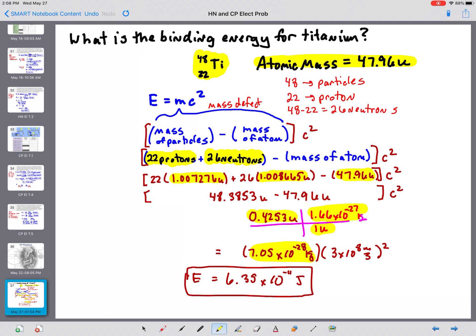And then multiply that by the speed of light squared. And that gives us the binding energy is 6.35 times 10 to the negative 11th joules.